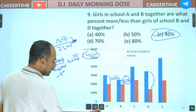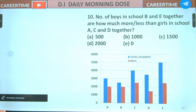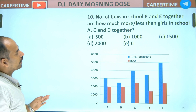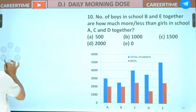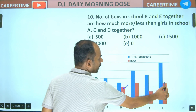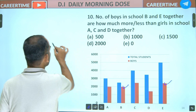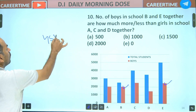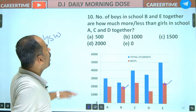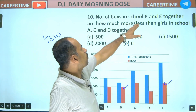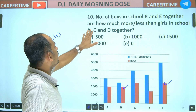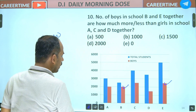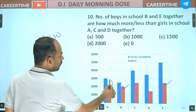Next: number of boys in school B and E together — number of boys in B and E together — is how much more or less in percentage than the girls in schools A, C, D? Girls in A is 1,000.